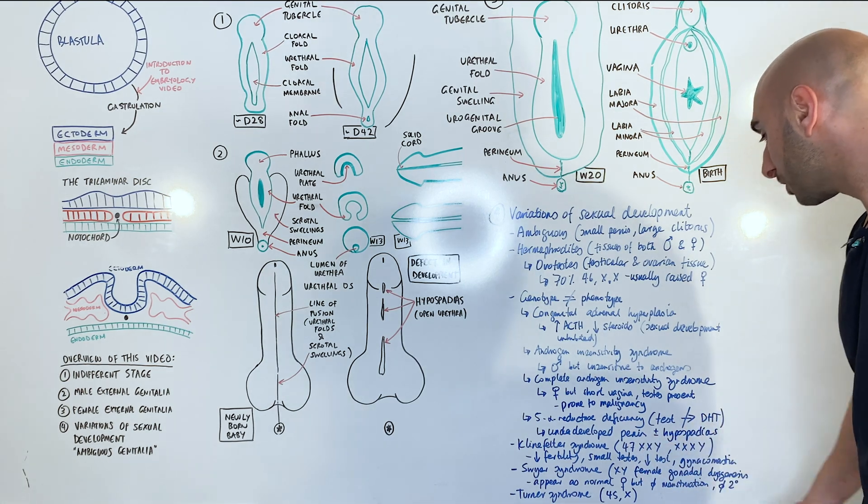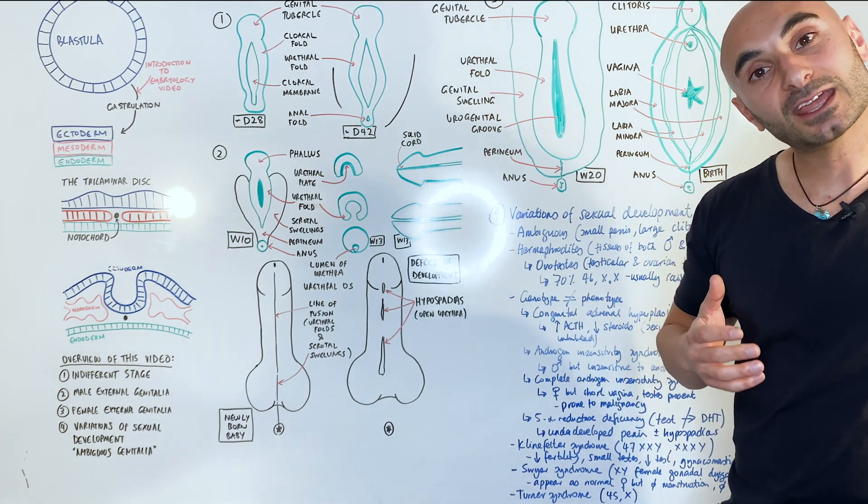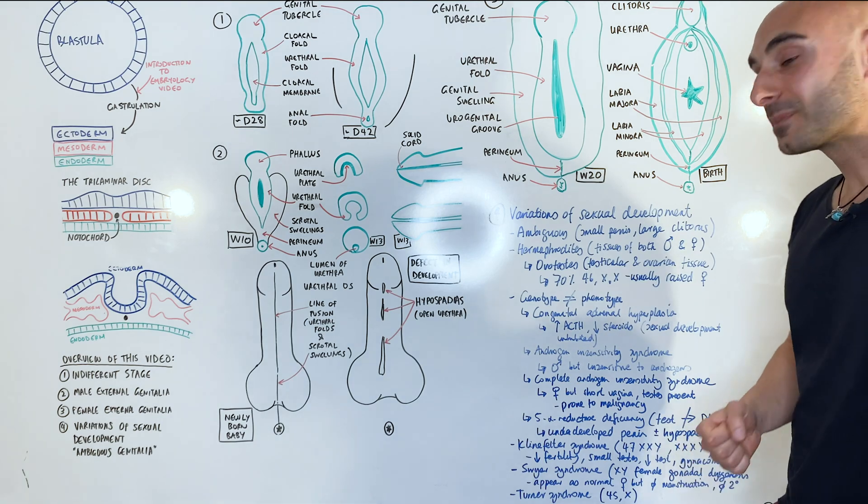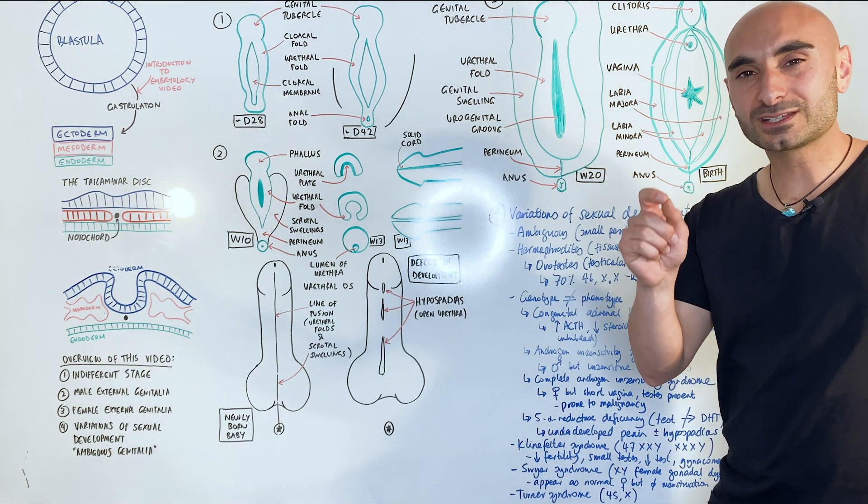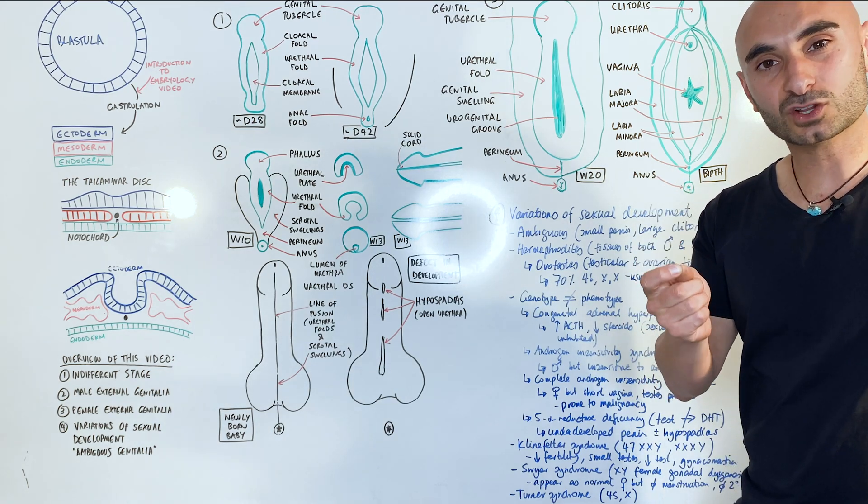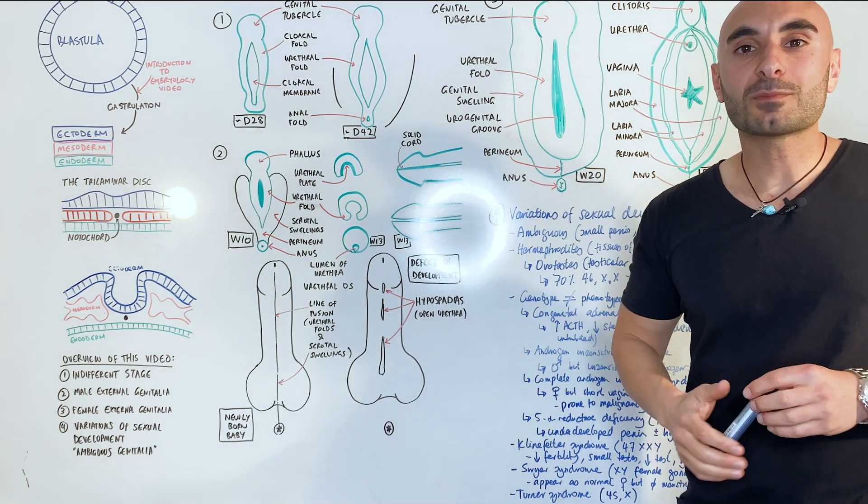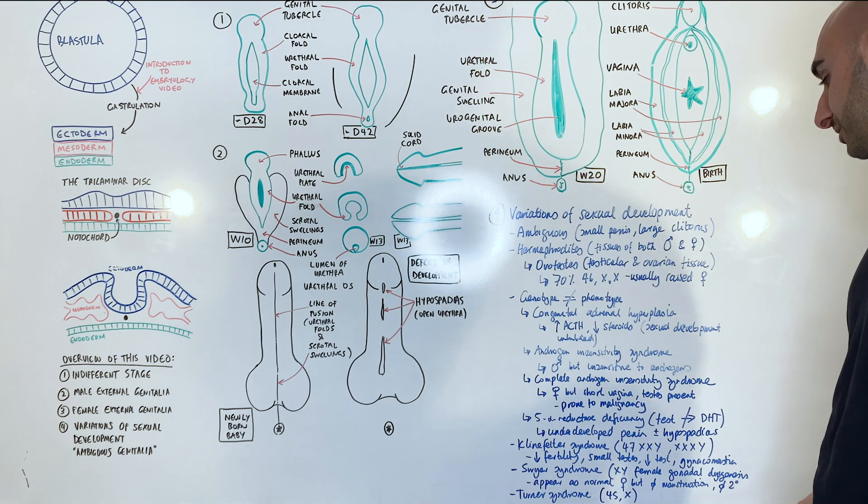Klinefelter syndrome is when you could have a 47XXY or an XXXY genotype. And so you can suffer from infertility, a small testes, and only slight testosterone production, as well as plus minus gynecomastia. Gynecomastia isn't always present in people that have Klinefelter syndrome.